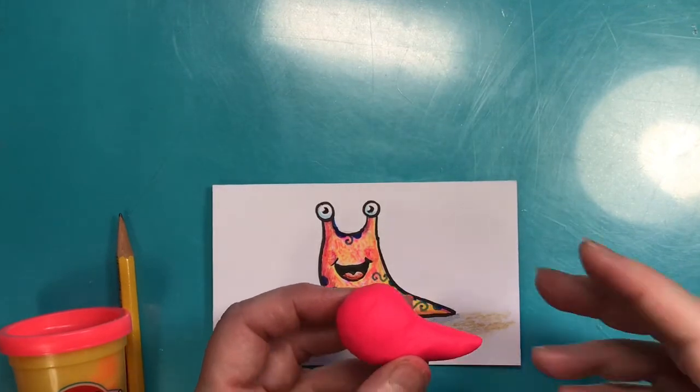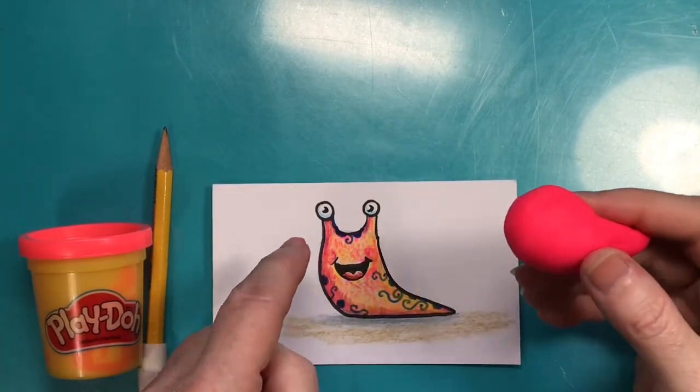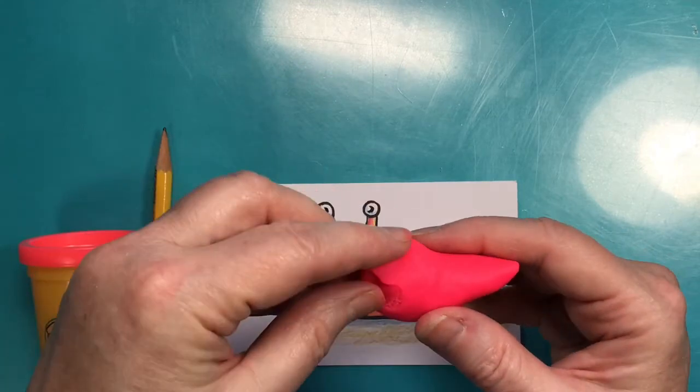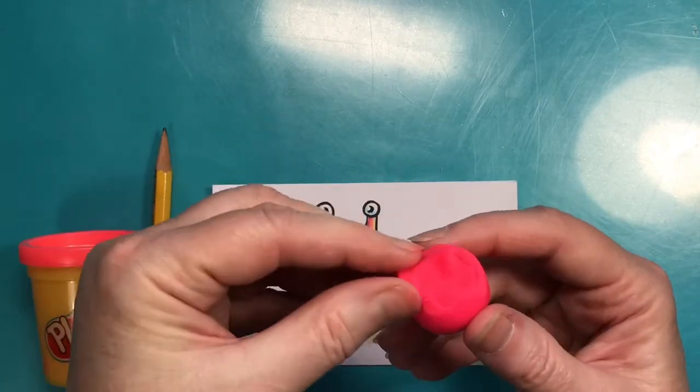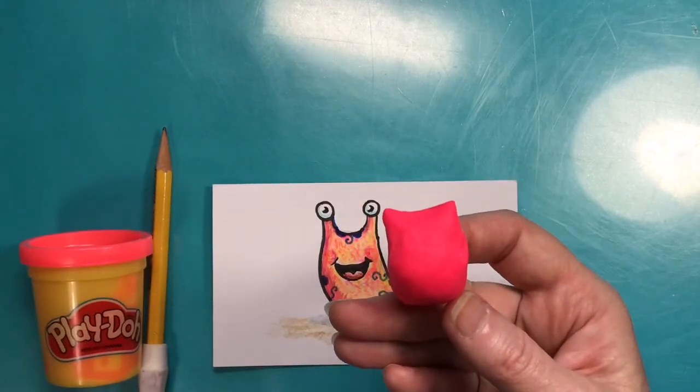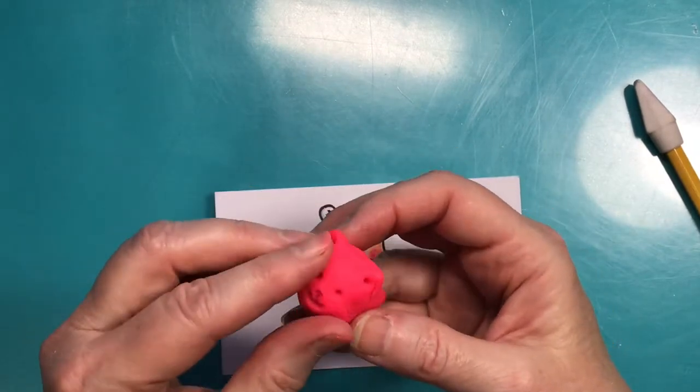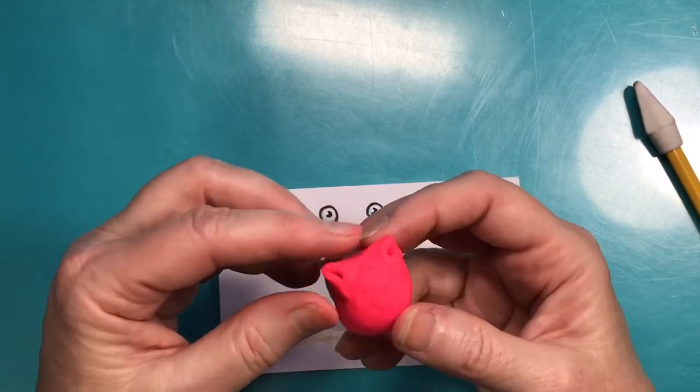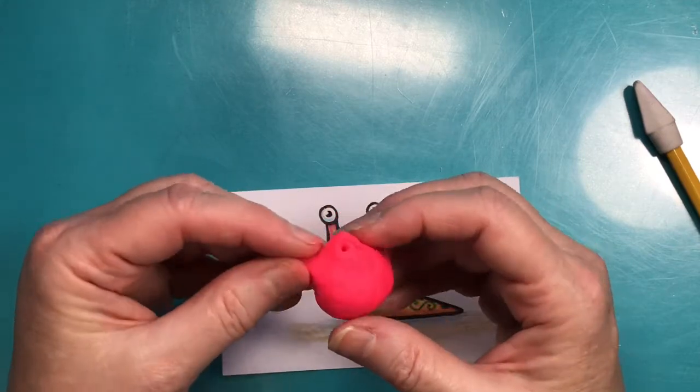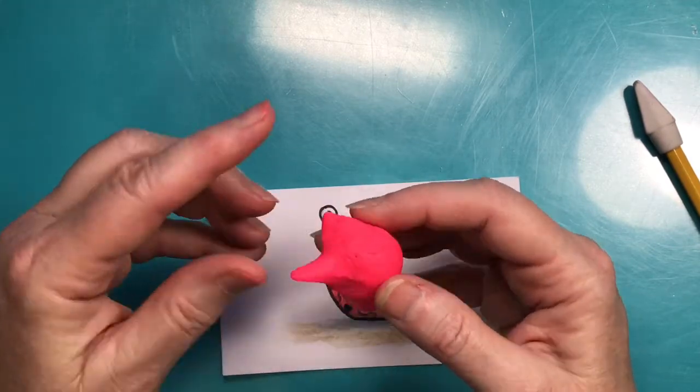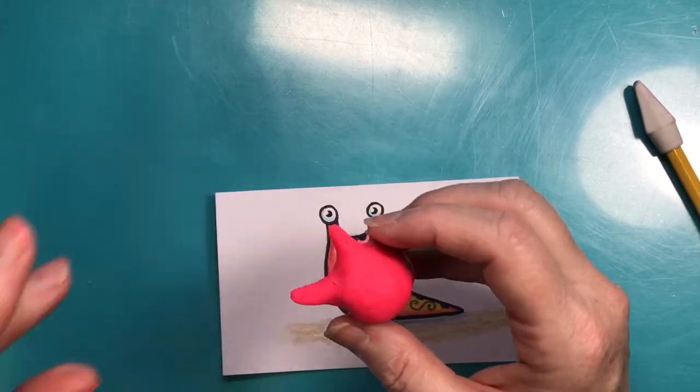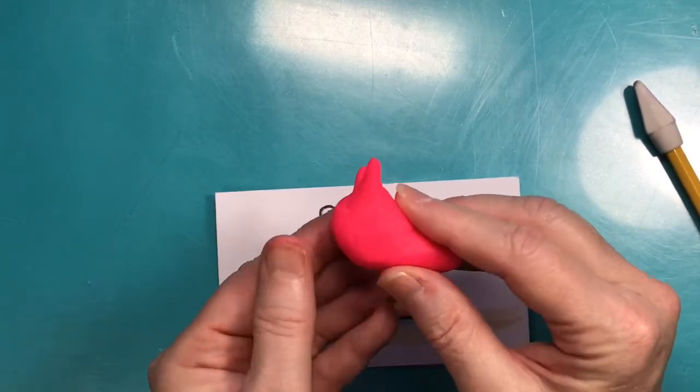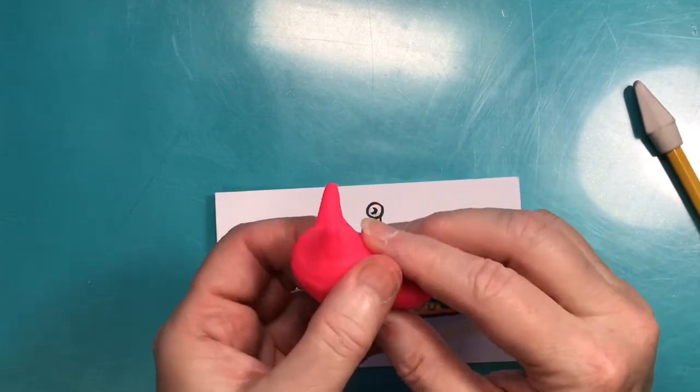What I'm gonna do next is I'm gonna make the eye stalks, and I'm gonna use my fingers to pinch the eye stalks. So I'm gonna pinch here on this side and this side. Kind of looks like a little kitty cat head right there. I'm gonna take each one of them and I'm just gonna pinch them a little bit more to make the eye stalks, like little horns. So there we have our little slugger.